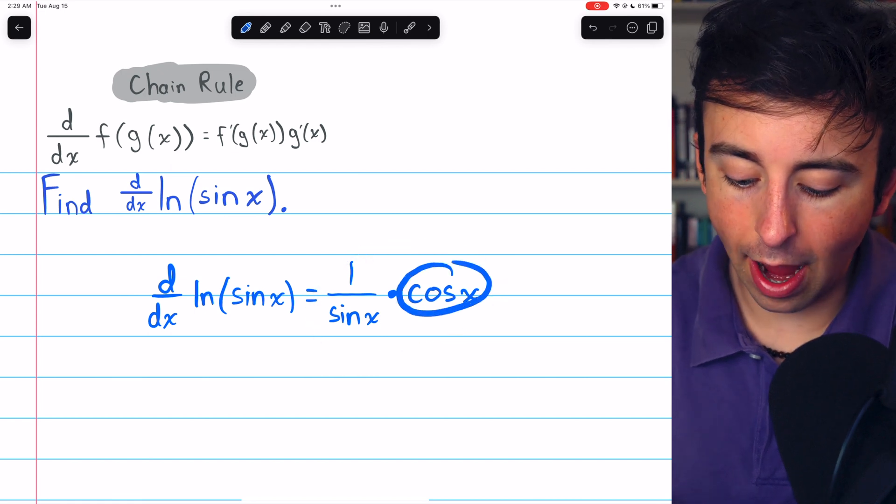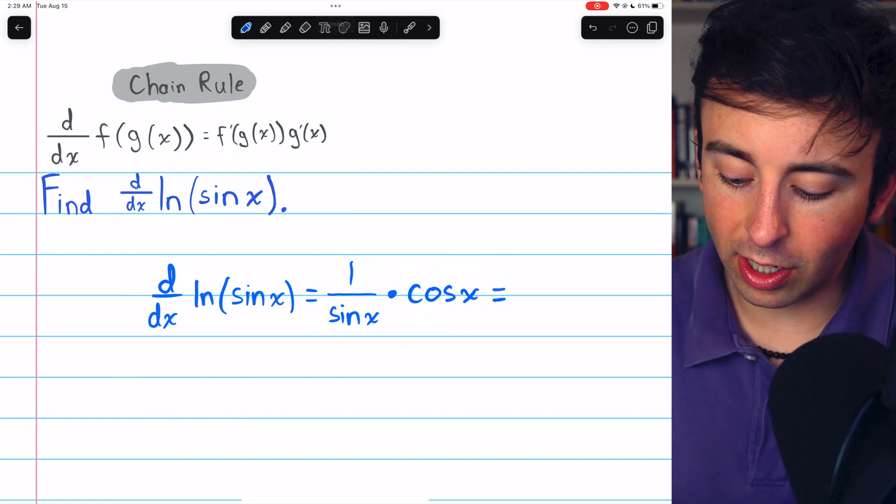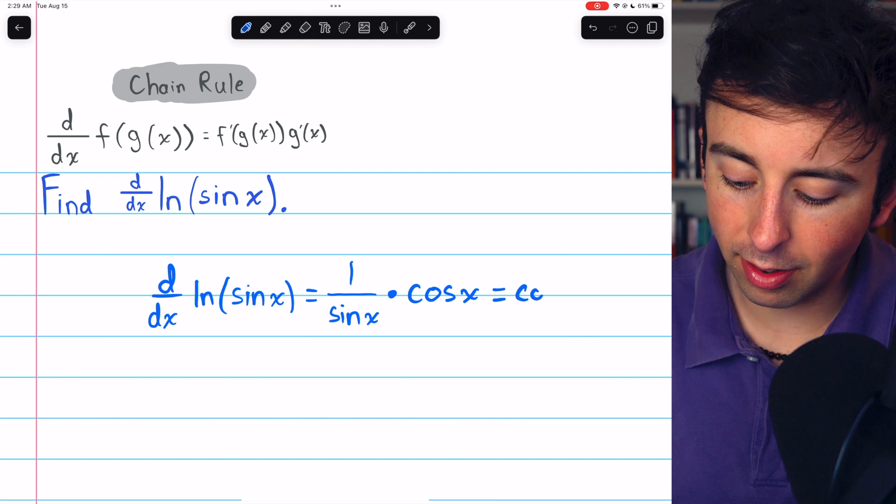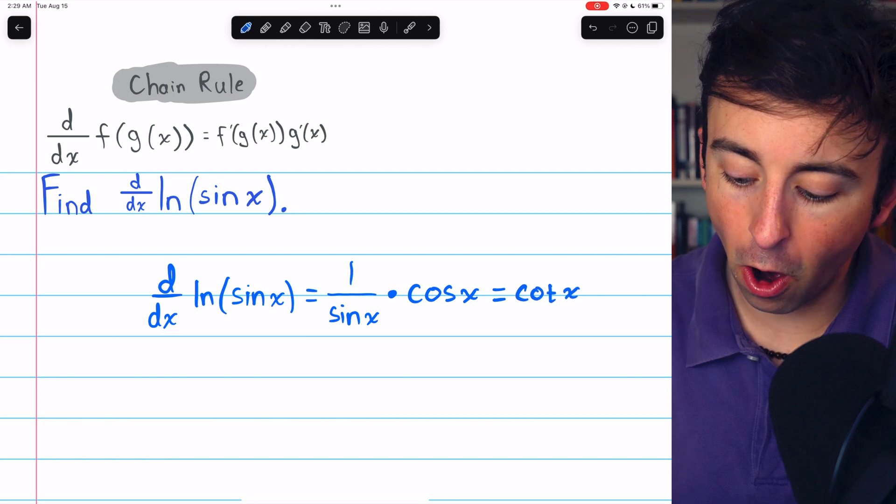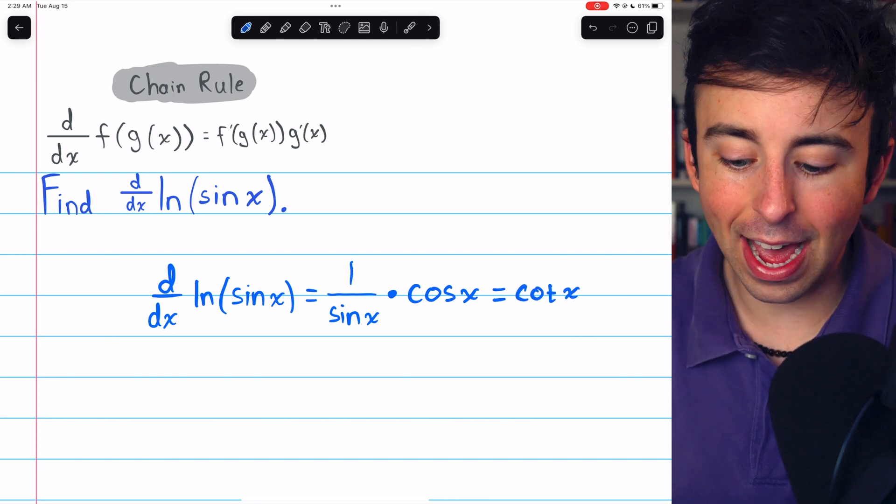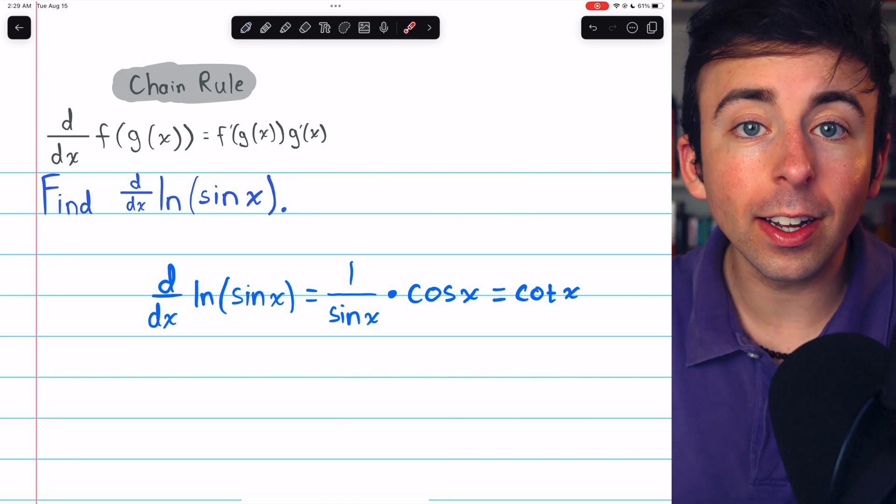This, of course, is cosine over sine, which is the reciprocal of tangent. So we could rewrite this as cotangent x. That's the derivative of the natural log of sine x.